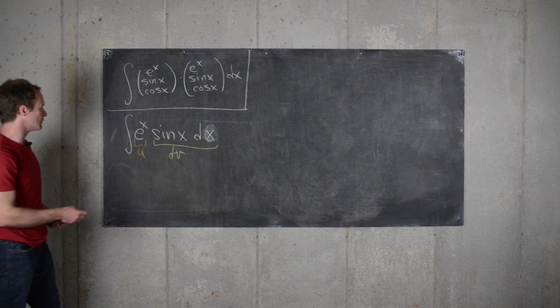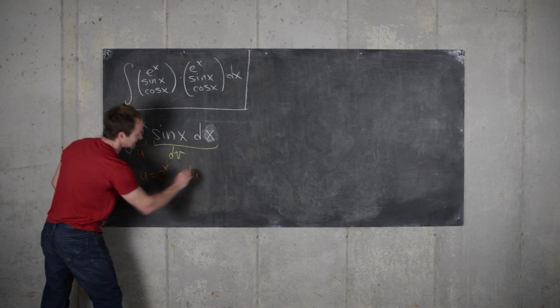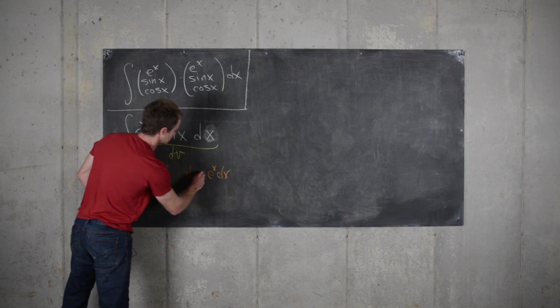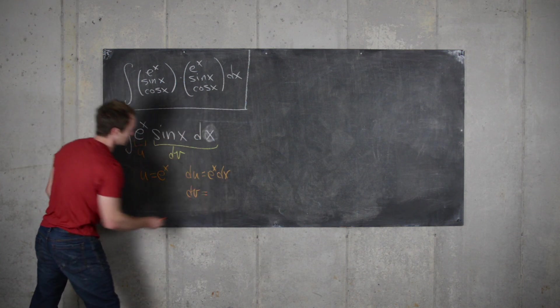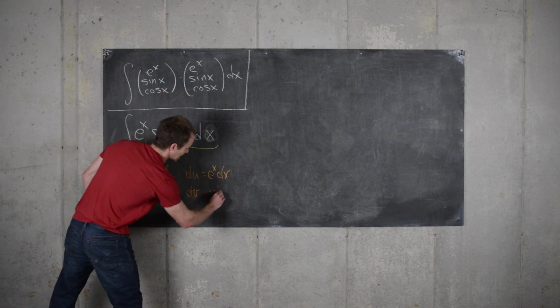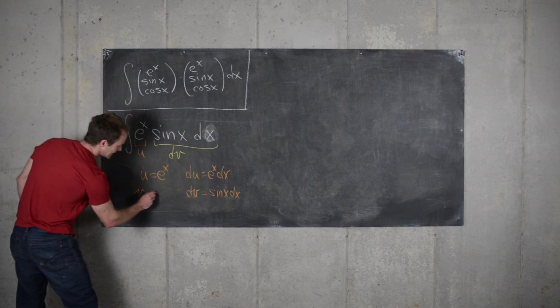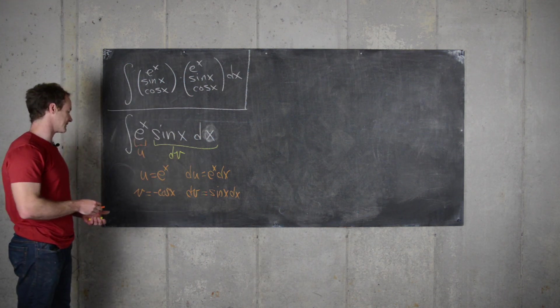So let's see what that does. So if we let u equal e to the x, that means du equals e to the x dx. And then if we let dv equal sine x dx, that means that v is equal to negative cosine x, because the antiderivative of sine is negative cosine.